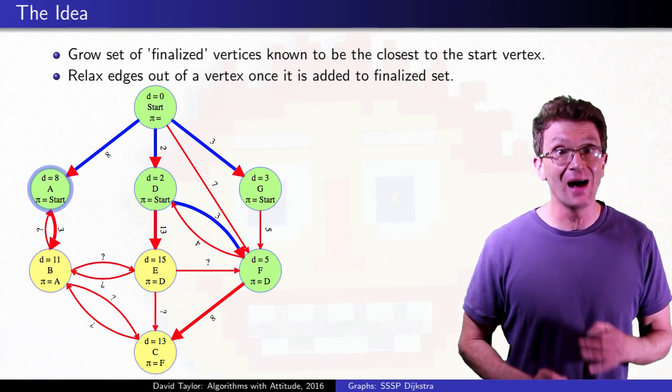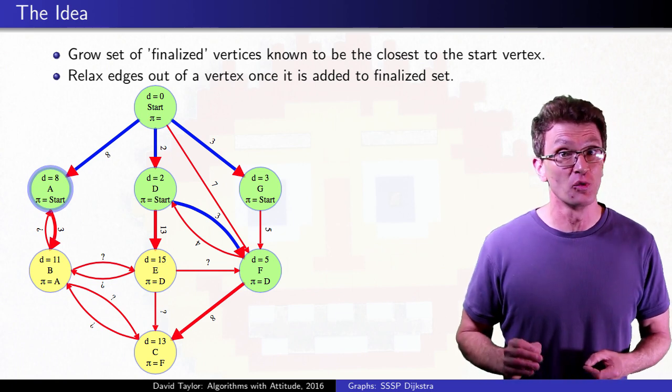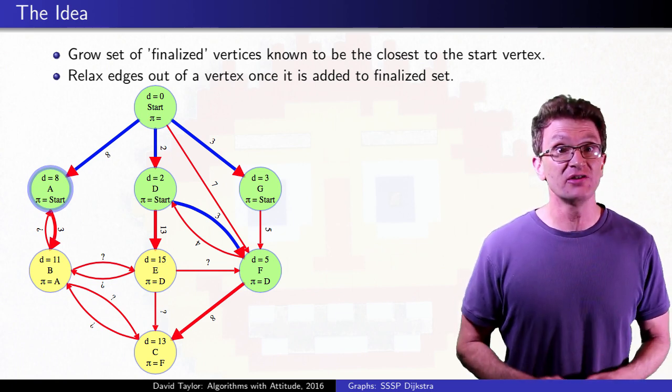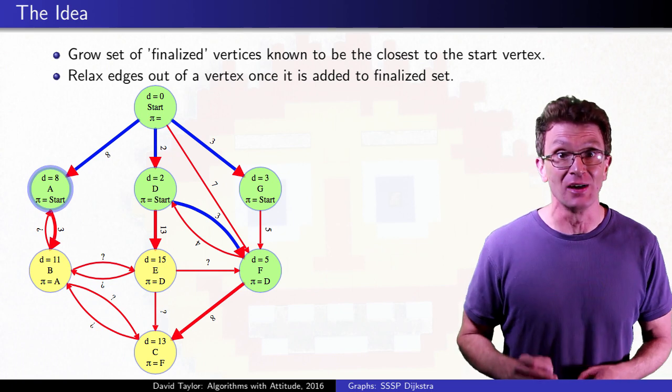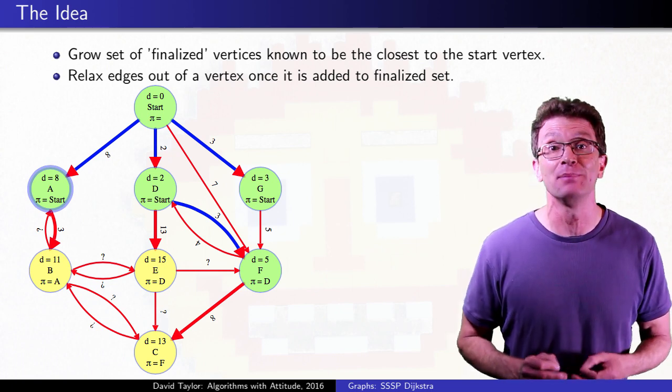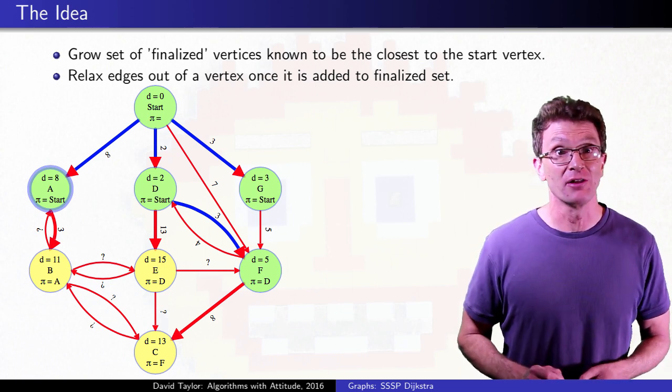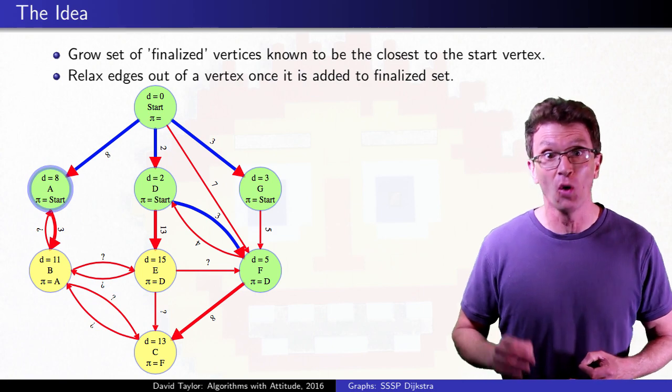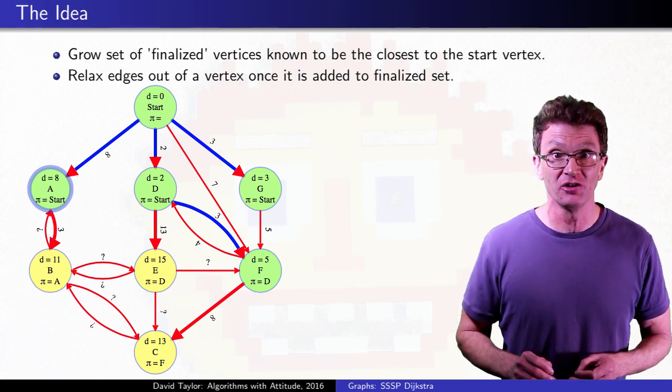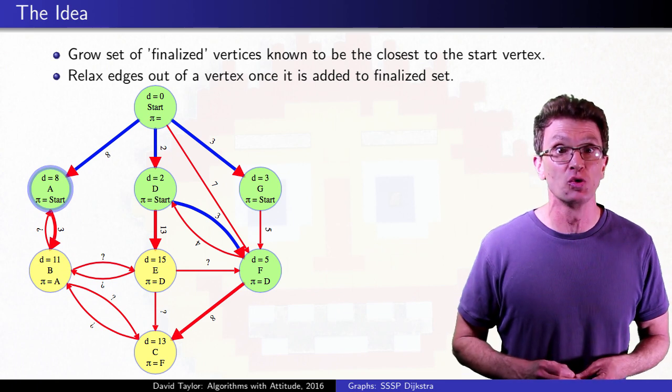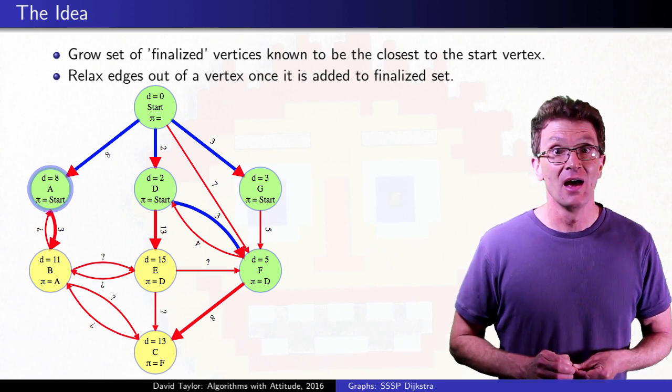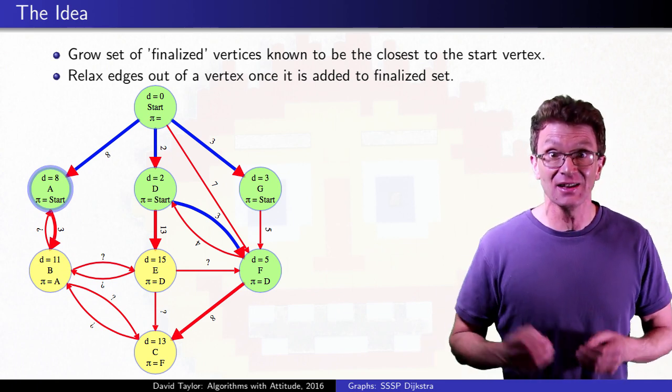No matter what non-negative weights you fill in for the rest of the graph, the shortest distance to B will be 11, and neither C nor E can be closer. Any path from start to B, C, or E has to start on finished vertices, and then eventually have an edge to a non-finished vertex, and that costs at least 11.